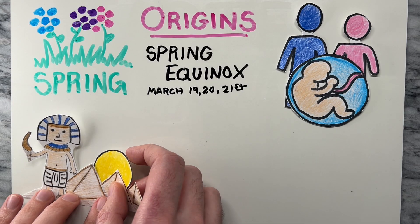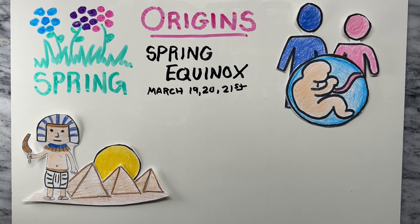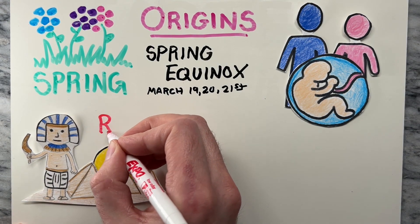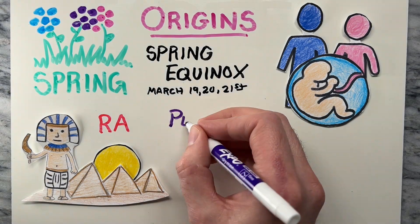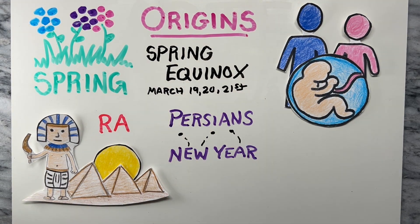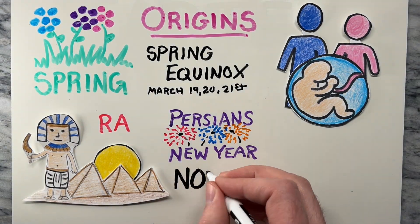The ancient Egyptians, for example, celebrated the return of their sun god Ra from the dead, while the Persians celebrated their new year, known as Nowruz.